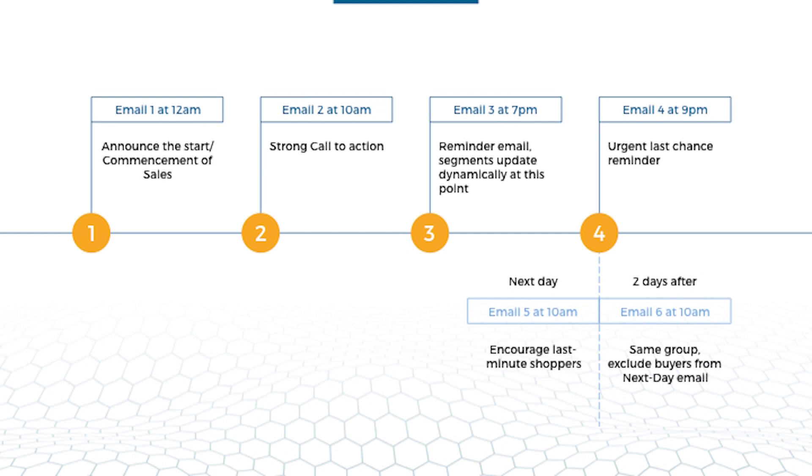Email 2 needs a strong call to action and an urgency reminder. But the 10 a.m. email does not have to exclude those who bought at 12 a.m., especially if you still have stock available. You want to reach out to everyone, including early buyers. You'll be surprised at how many additional sales you can get from buyers who already purchased earlier that same day during a major sales event.